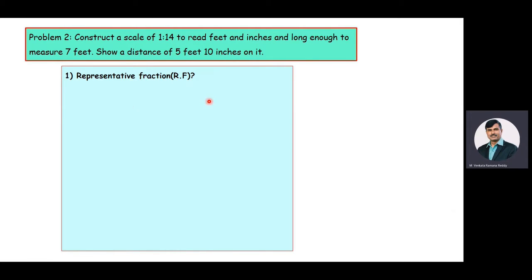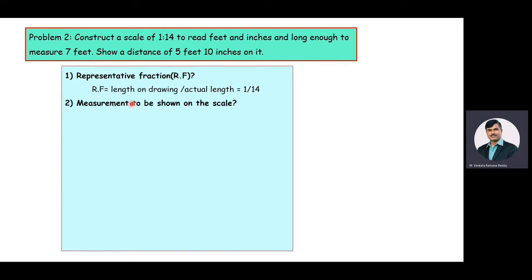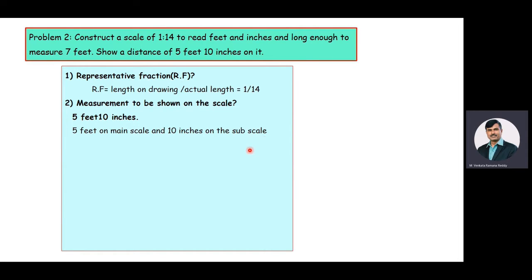RF value equals length on the drawing divided by actual length, which equals 1 by 14. That means the actual length is reduced 14 times, so this is a reduced scale problem. The measurement to be shown is 5 feet and 10 inches — feet are on the main scale and inches on the subscale. Since 1 foot equals 12 inches, we are constructing a plane scale.